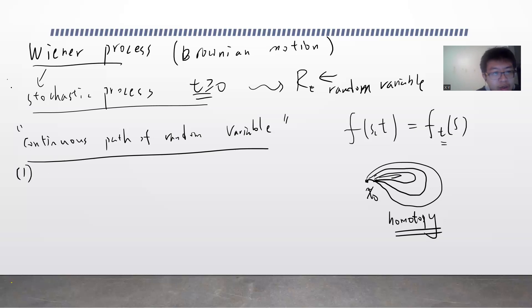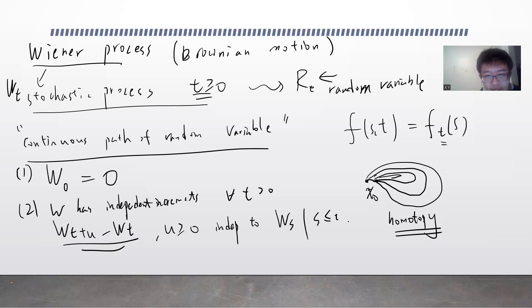So first one, this is called Wt, which satisfies W0 equals 0, where 0 means a 0 random variable. And W has independent increments. Don't worry. So for t greater than 0, I can study Wt plus u minus Wt. Two random variables can do a difference. For u greater than 0, then this guy is independent to Ws, where s less or equal to t. So basically simply saying is that given any three intervals, let's say t1, t2, t3, and Wt3 minus Wt2 is independent of Wt2 minus Wt1.